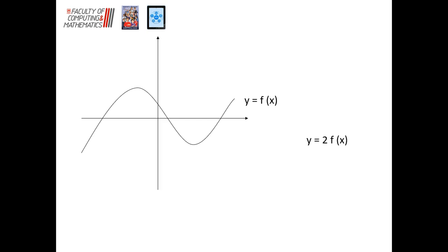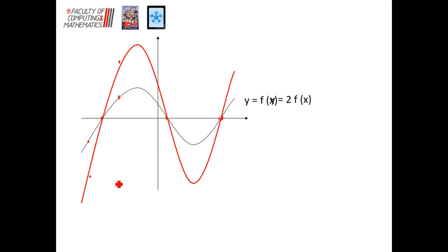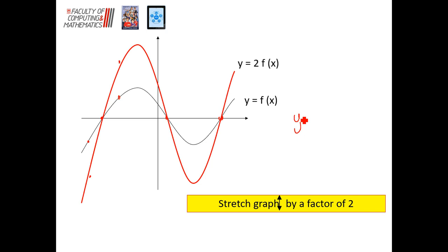Now we're going to look at 2 being on the outside — a multiplier at the start, outside of your f of x, outside of your bracket. What's happening is every y value is getting multiplied by two. So if that was negative 3, it would turn into negative 6. If this was 2, it would turn into 4, and so on. Your zeros, when you multiply by two, are still going to be zeros, so those points don't change. We're going to have the same graph but twice as stretched out. Your general rule: if you have a multiplier of k, it's stretching by a factor of that multiplier. The x values, the roots, don't change.